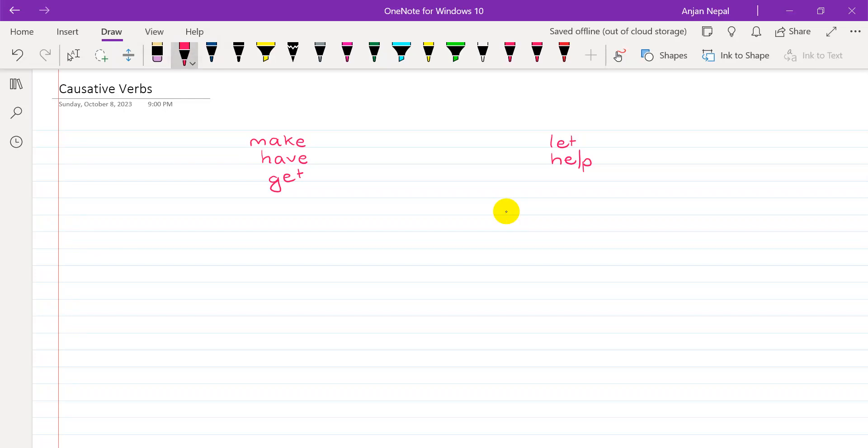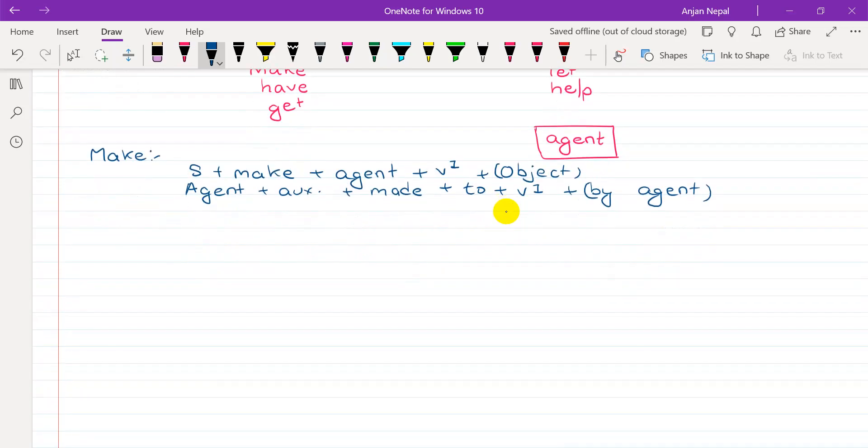We will know the agent, so by plus agent. We will start with make. We have two structures of make. In active voice, we say subject plus make plus agent plus verb one plus object. And the second structure in passive, we use agent plus auxiliary verb plus made plus to plus verb one plus by plus agent. If agent is necessary, we use by plus agent.